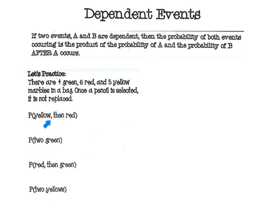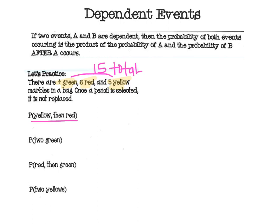We're only going to do this first question. It says there are four green, six red, and five yellow marbles in a bag. You are going to select one and it is not going to be replaced. We're going to find the probability of first getting yellow and then getting red, but we are not putting the yellow one back — so that means we'll have one less total. Four plus six plus five means 15 total marbles.